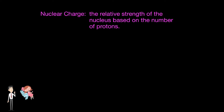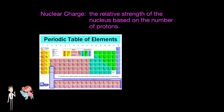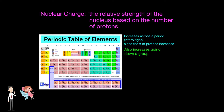Nuclear charge is basically the relative strength of the nucleus based on the number of protons. We can apply this to the periodic table: when you go across a period, the number of protons increases, indicating the increase of nuclear charge. Furthermore, the same concept works down a group, since protons are also being added. Therefore, the atomic number of an element dictates its nuclear charge, because the atomic number indicates how many protons there are in the nucleus. However, this is just the nuclear charge.